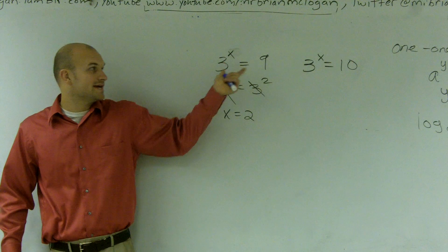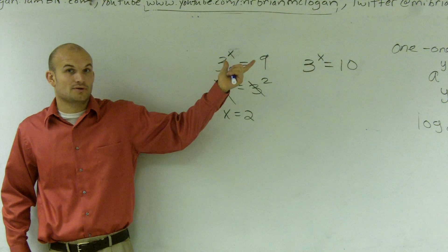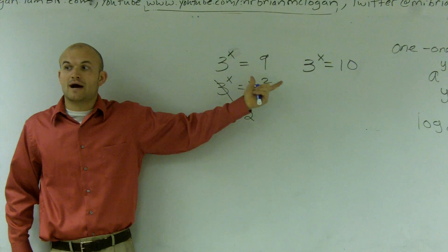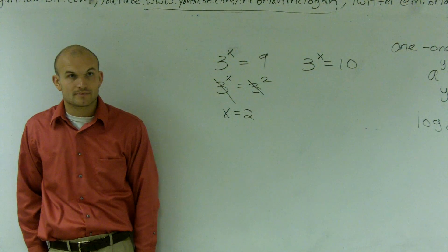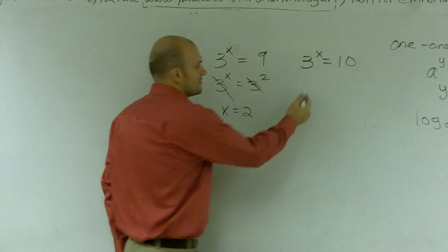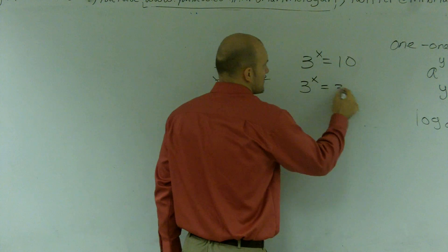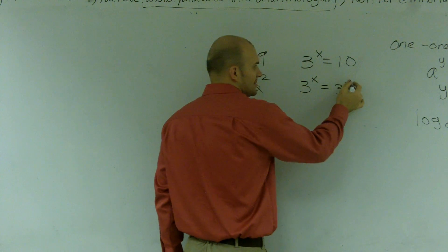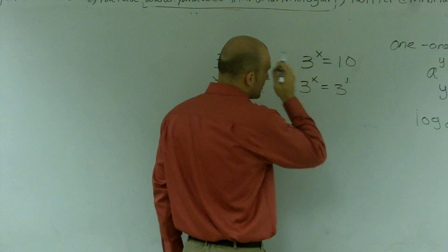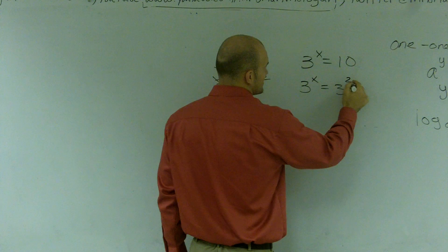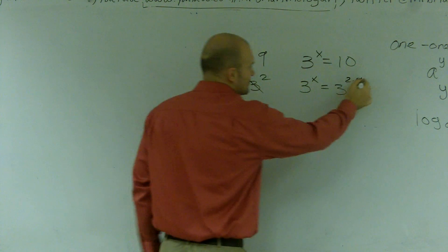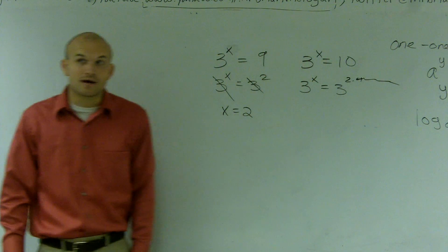Now, we know we can't raise 3 unless we're going to get a decimal. We can't raise 3 to some power integer to give us 10, right? So doing this is going to be 1 point or it's going to be like 2 point 0 1 blah blah blah. It's going to be this number that we don't know, right?